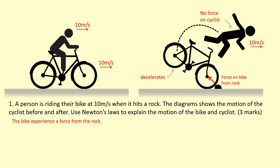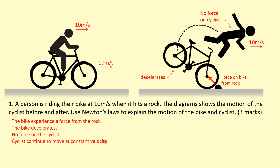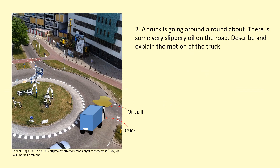To write this up for full marks: the bike experiences a force from the rock, so the bike decelerates. However, there is no resultant force on the cyclist, so the cyclist maintains a constant velocity — same speed, same direction. By Newton's First Law: objects remain at rest or at constant velocity unless acted upon by a resultant force.